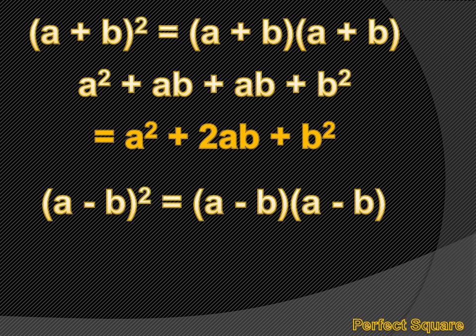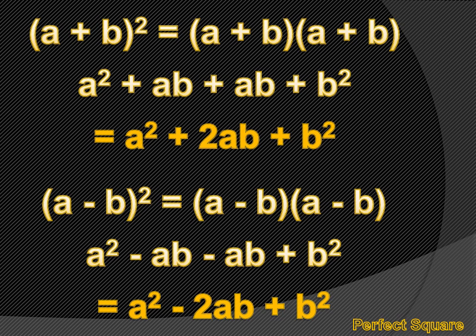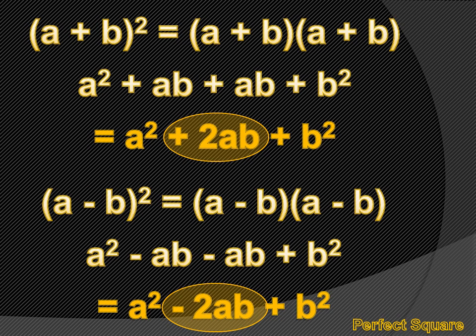How about if I had a minus b squared? That's a minus b times a minus b. If I carried that out, it would be a squared minus ab minus ab plus b squared, or a squared minus 2ab plus b squared. So the difference between a plus b squared and a minus b squared is the middle term — the sign changes in the middle term from positive to negative when the sign in the factor changes from positive to negative.